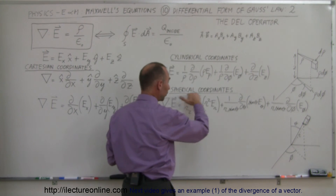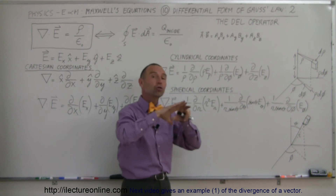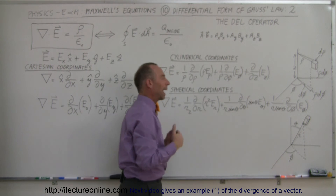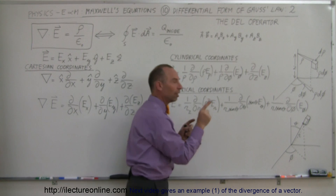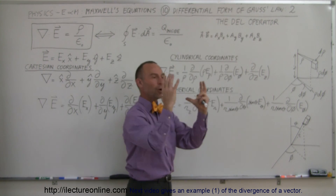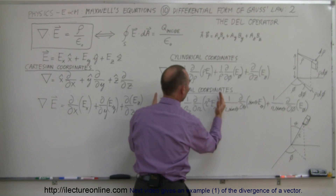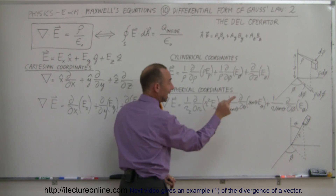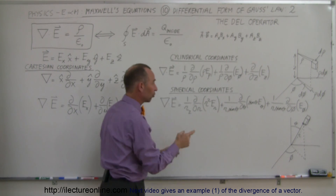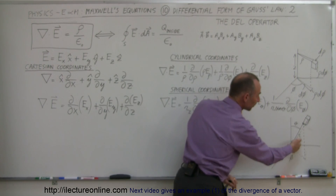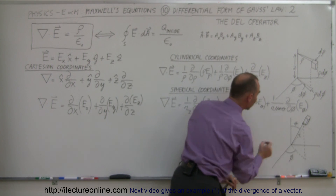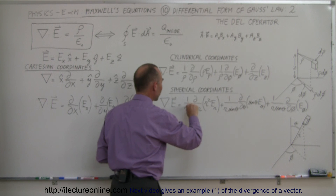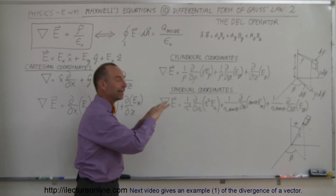If we have a spherical charge density, we should use spherical coordinates. Again, if the field is uniformly distributed in a spherical shape, we don't need to worry about the angular portions of the del operator — we only have to concentrate on the radial portion, because the electric field will be the same strength in every direction pointing away from the spherical region. So to find the divergence of the electric field, we take the electric field strength at the surface of the Gaussian surface, multiply times r squared, take the partial derivative of that, and multiply by 1 over r squared — that gives us the divergence of the electric field in spherical coordinates.